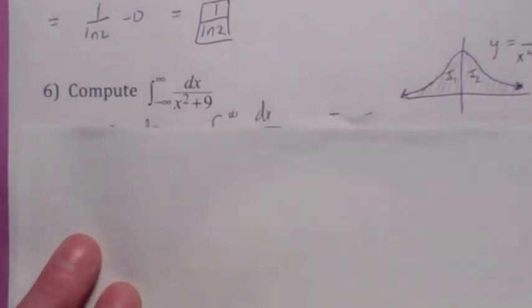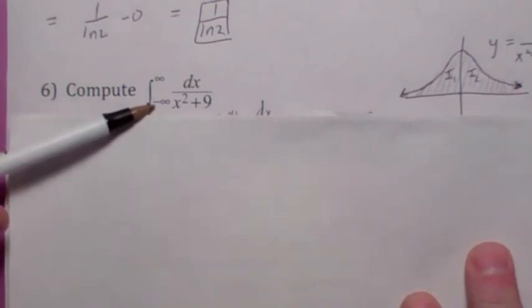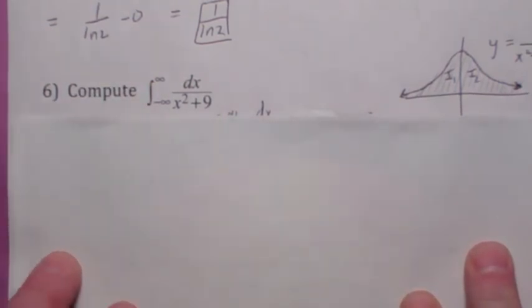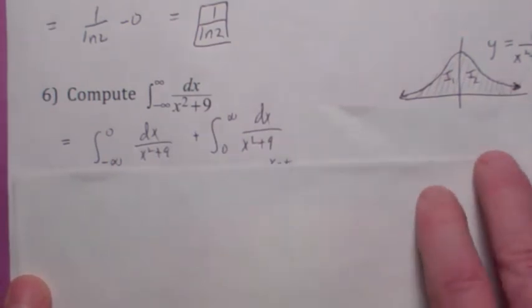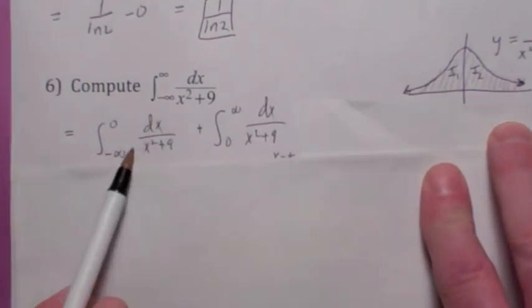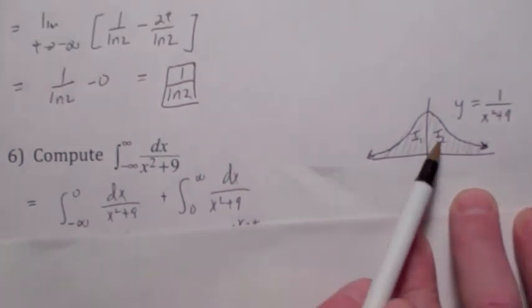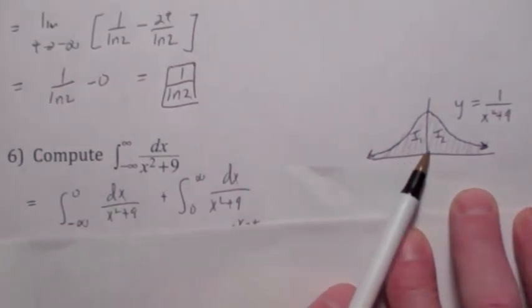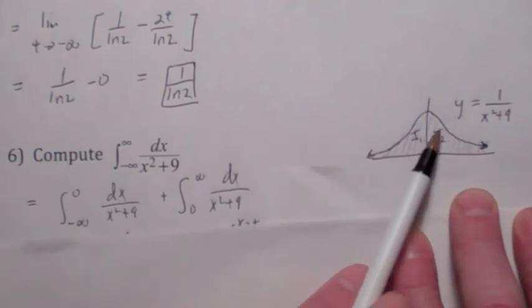Sometimes you have an improper integral with infinite limits as both a lower and upper limit. You have to break it up into two separate improper integrals, and both of them have to converge independently. If you look at the graph of 1 over x squared plus 9, it's an even function. So if you compute one of these integrals — say i2 — and show that it converges, then by symmetry, since it's an even function, i1 would have to converge as well.